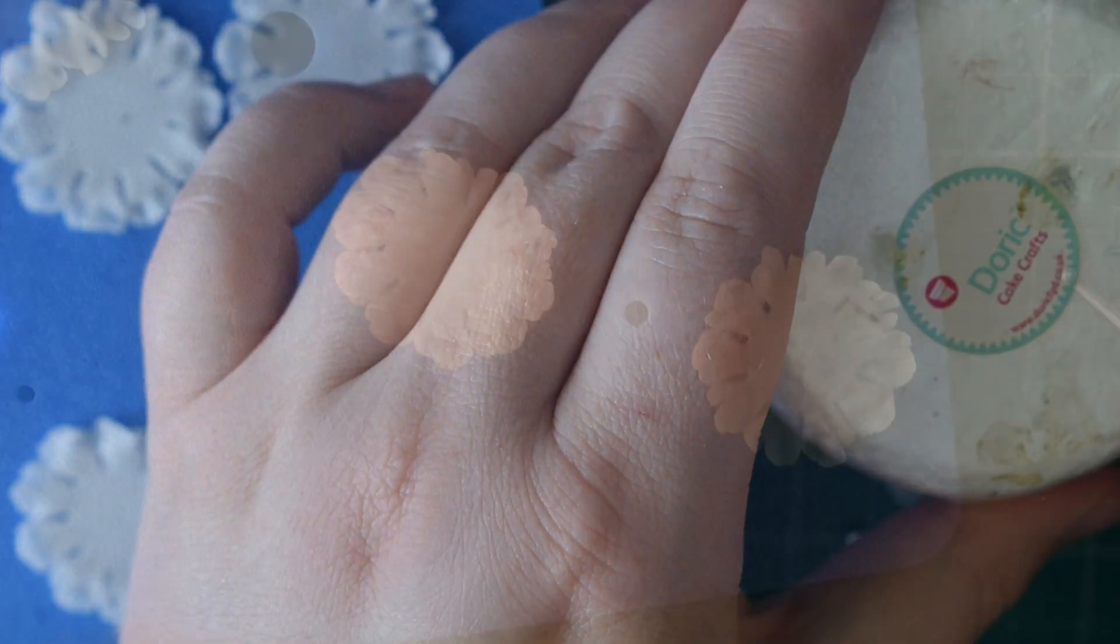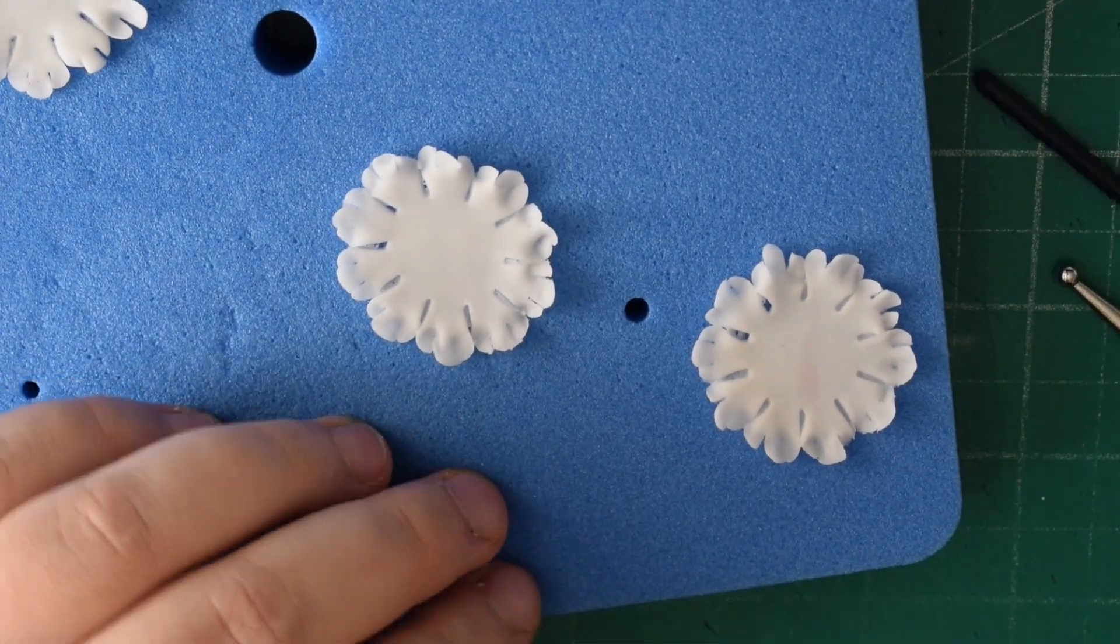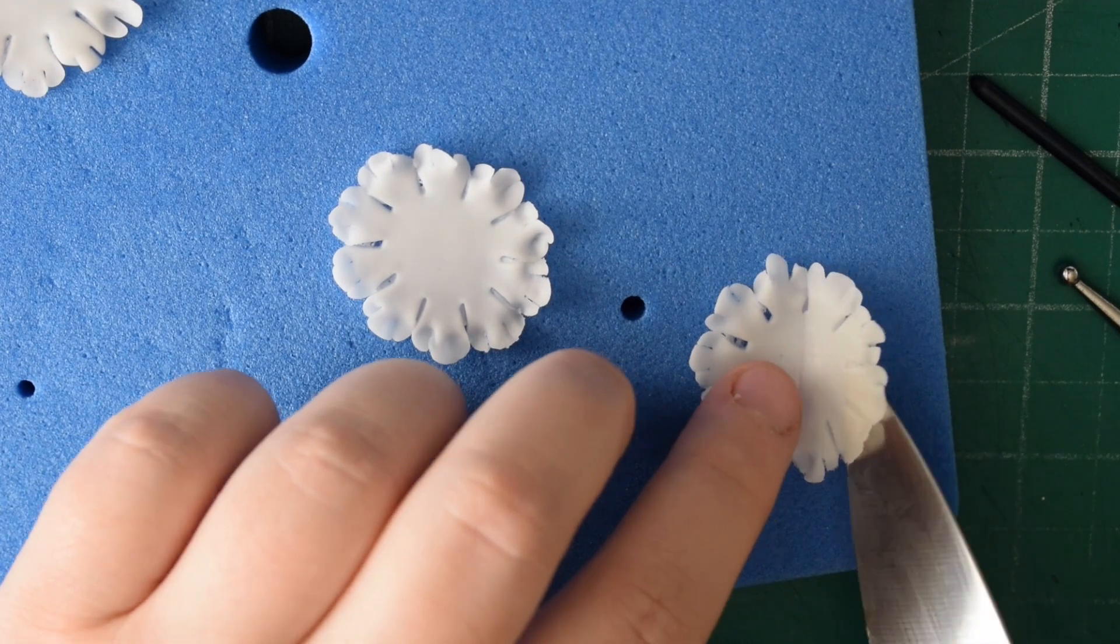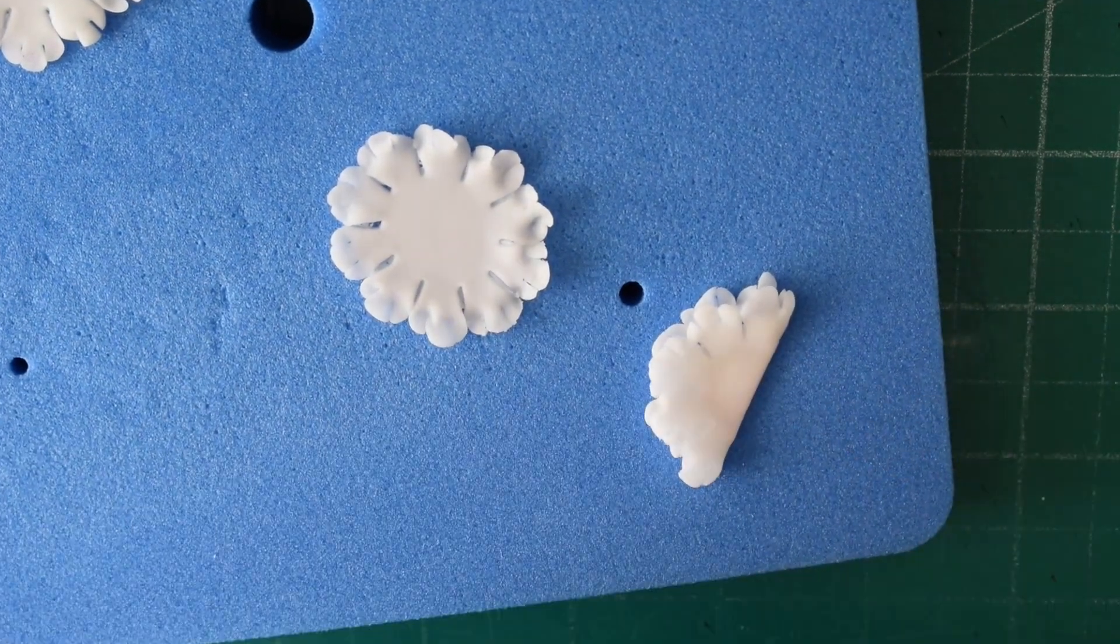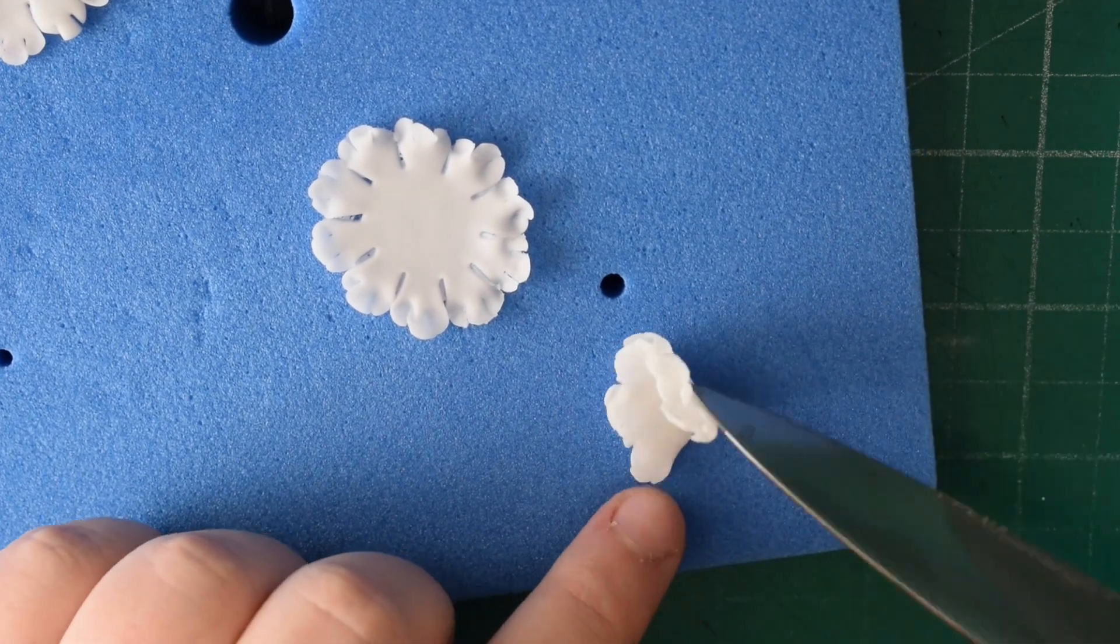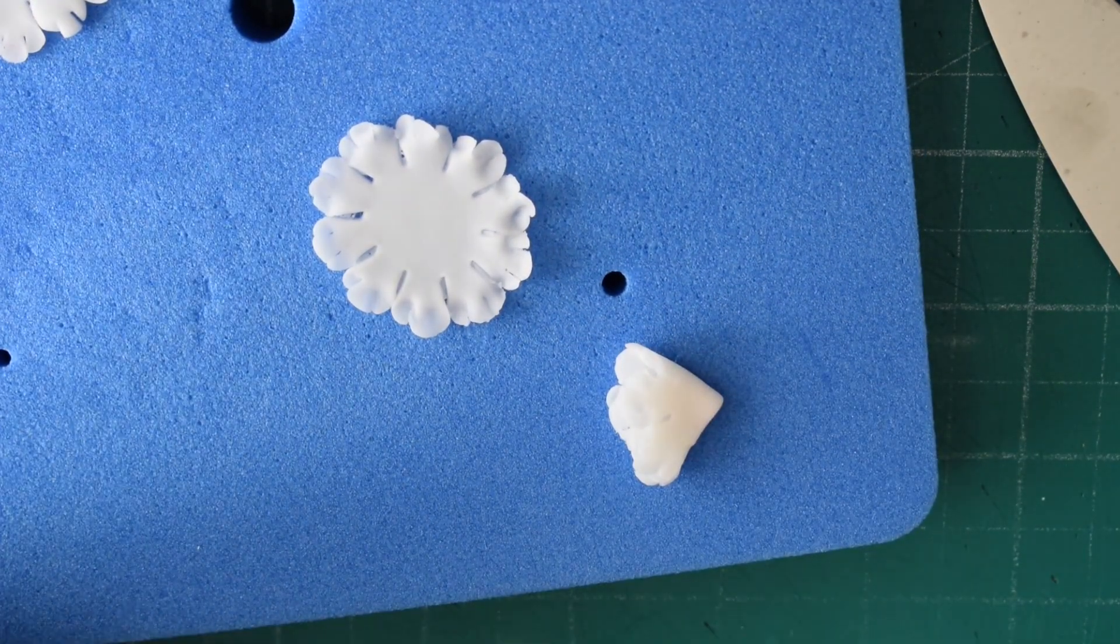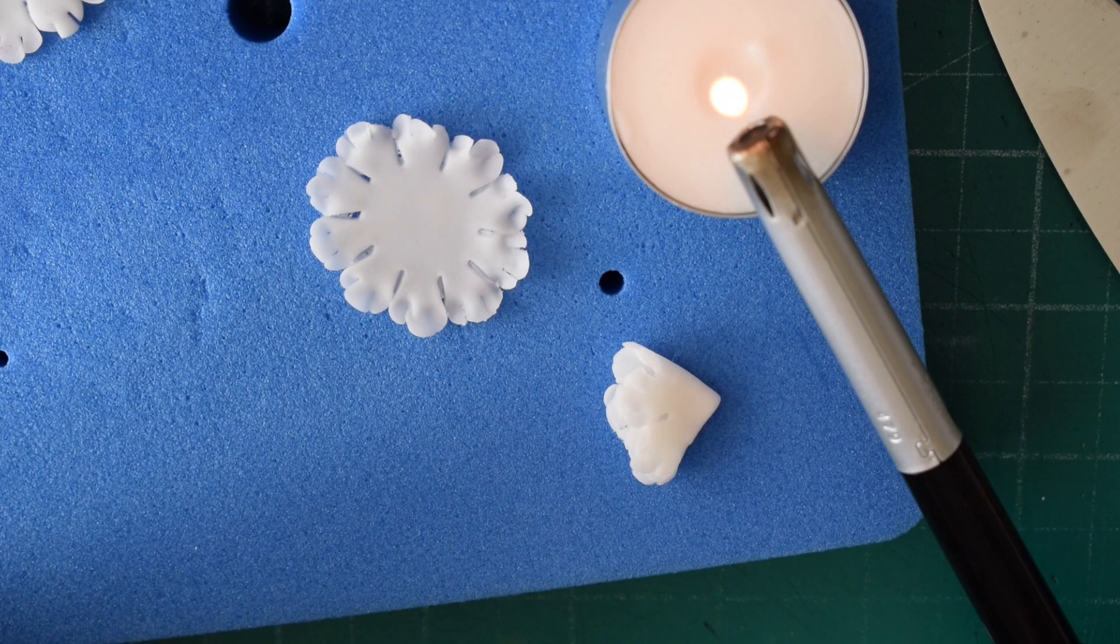So we're going to do this to all of the petals that we've got here. So a little bit of water, marking it with a knife to cut it in half. And then a little bit more water and again cutting it in half again.